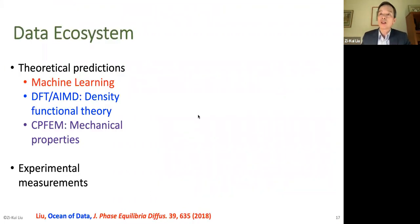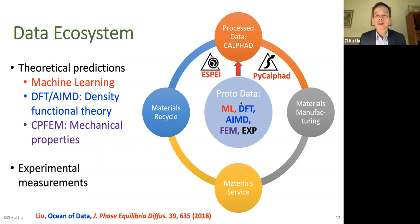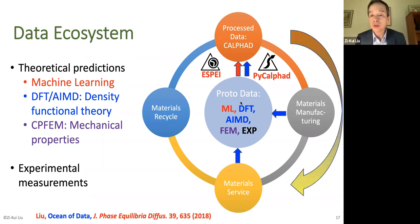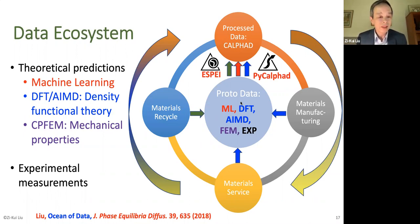The data ecosystem takes theoretical data, regular predictions, and experimental measurements to create a portal database. We use this portal data with high-throughput tools to develop CALPHAD databases, which enable material design. You make the material, get new data, feed it back into the portal database to refine it. We also consider material recycling, and data from the material cycle are fed back in to further expand and refine the CALPHAD database.